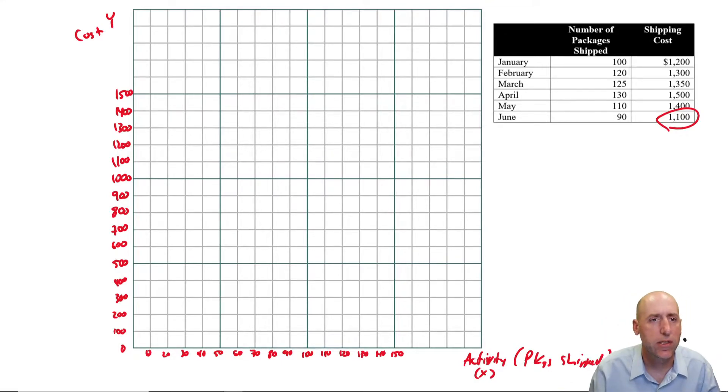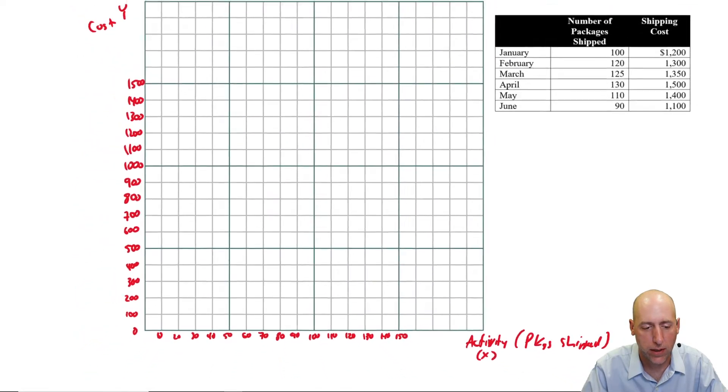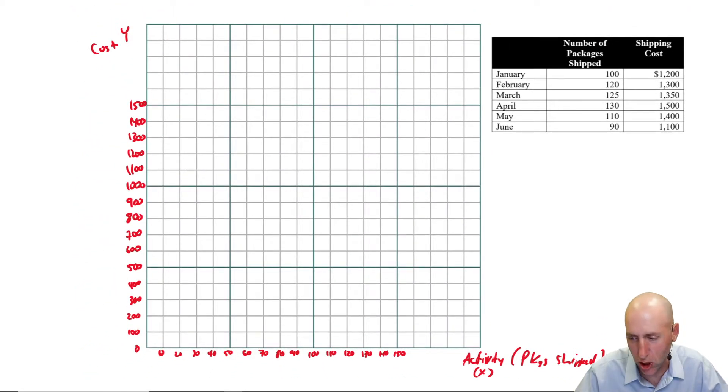So we've got ourselves a nice chart. Now Scattergraph just says, we want to use every piece of data. Plot your points, right? Just put the points on the chart.